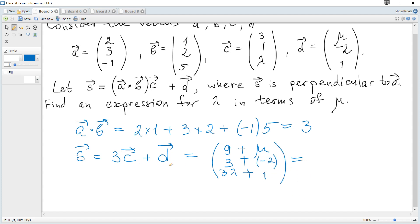So coordinates of s vector become 9 plus mu, 3 minus 2, and 3 lambda plus 1.